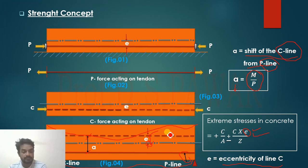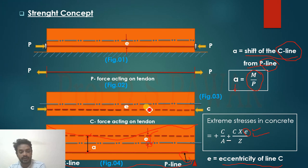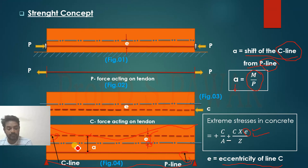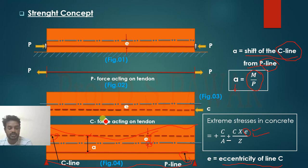So the concept is: the beam has two lines — P-line and C-line. P-line is the tendon line where the force is applied, and C-line is the concrete line where stresses develop. When the beam is on the ground, they coincide. When placed on a simple support, the beam bends due to self-weight, moment develops, and the C-line shifts from the P-line by distance 'a', calculated as M/P.